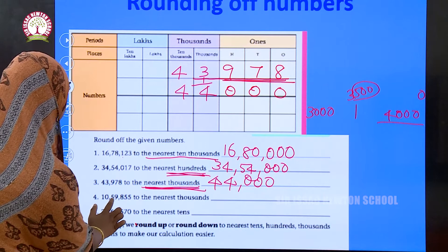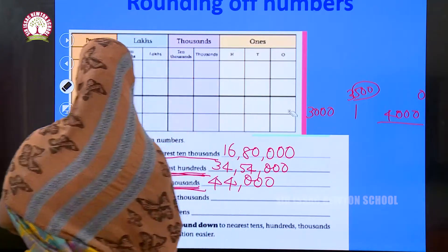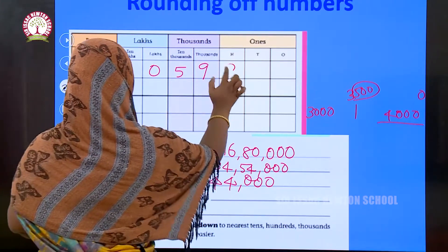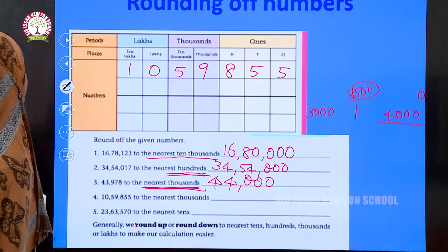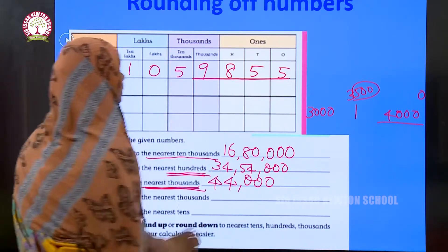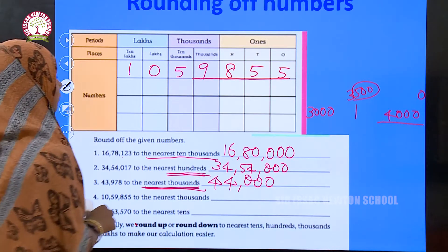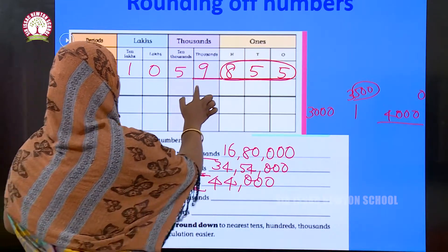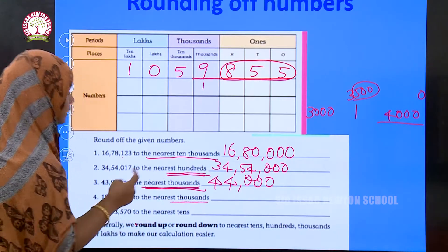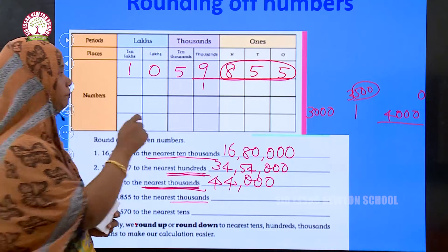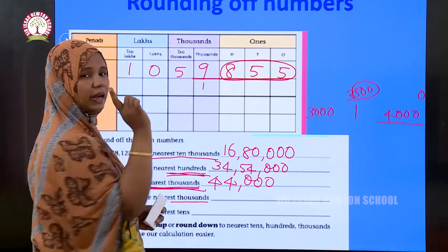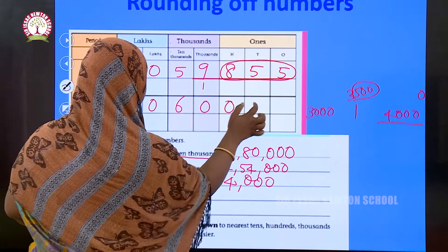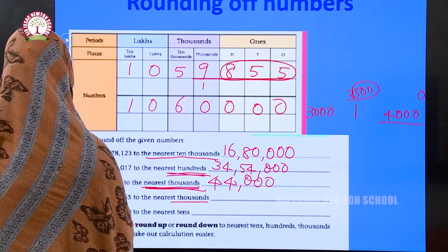Next question: 10,059,855 to the nearest thousand. We consider 9,855. The digits after the thousands place are 855, which is greater than 500. So we add 1 to the thousands place. Adding 1 to 9 gives us 10, carrying over, which makes it 60 thousand. The answer is 10 lakhs and 60,000.